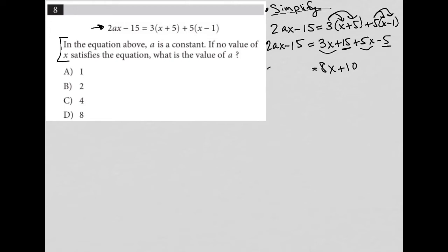And again, I have my 2AX minus 15 here. So the question says, in the equation above, A is a constant. If no value of X satisfies the equation, what is the value of A?